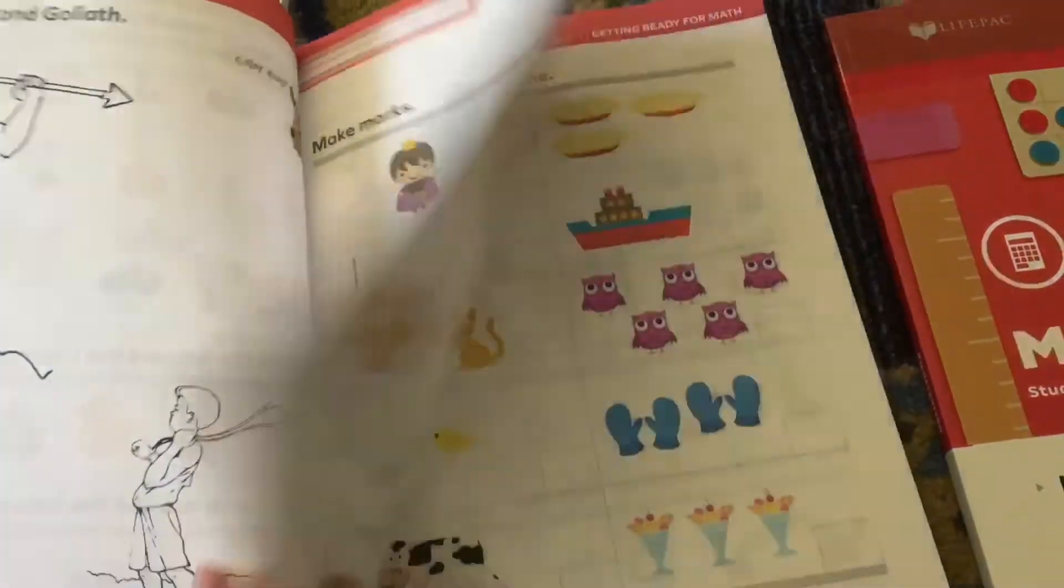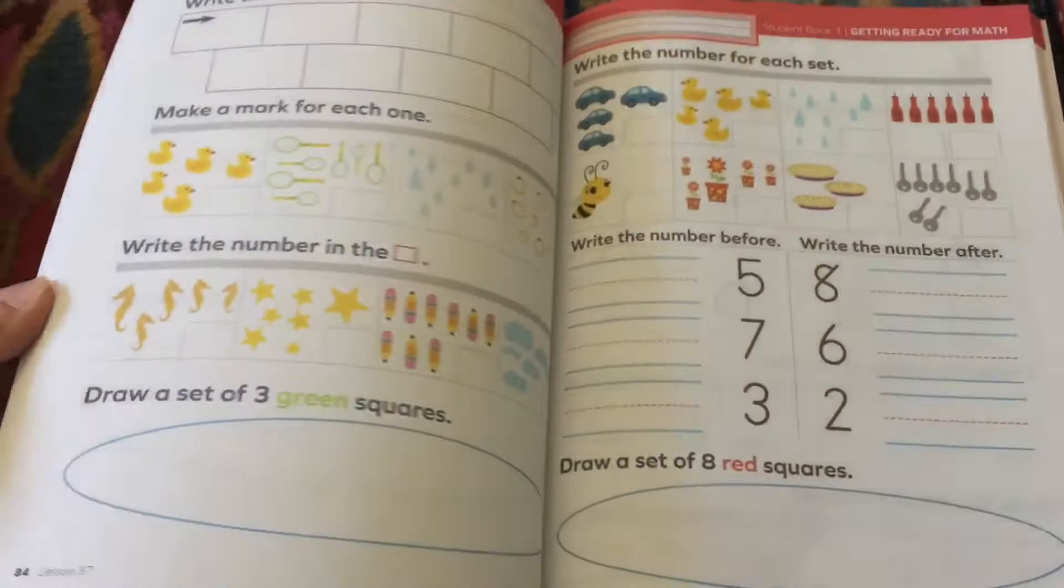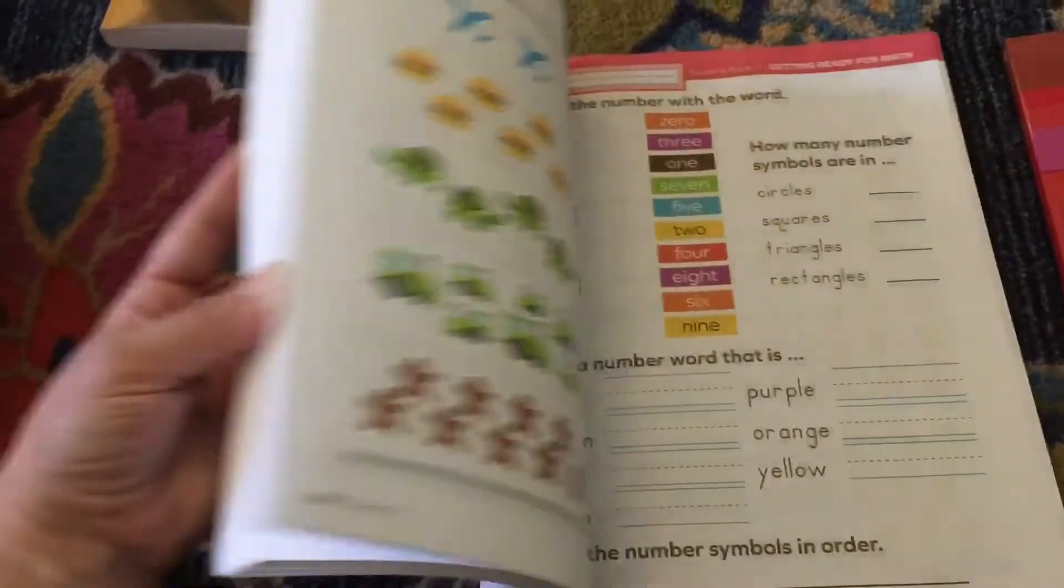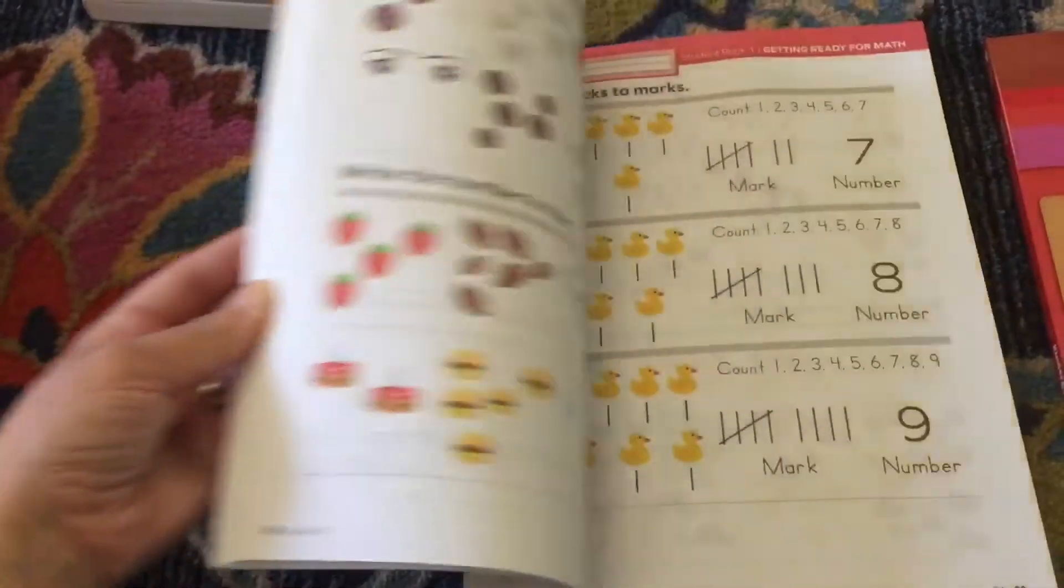So this is a Christian curriculum so you're going to see a lot of Bibles and crucifixes and different Bible references, some pages to color that have biblical figures. Which is totally not a problem with us because we're a Christian family, but if you are looking for secular curriculum this wouldn't be a good fit. That's book one. Gets harder as it goes. I love that it has color and it reminds me a lot of Horizons.